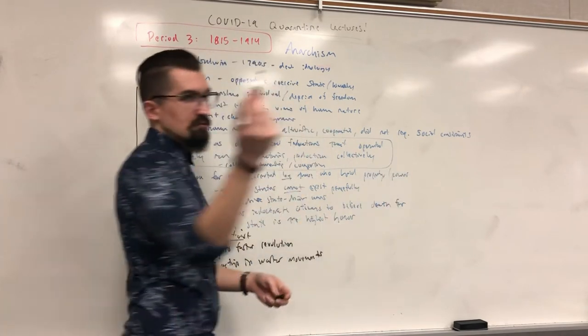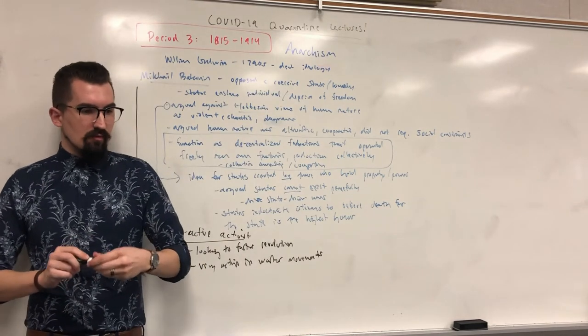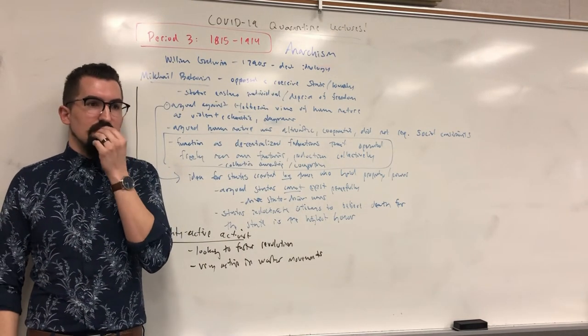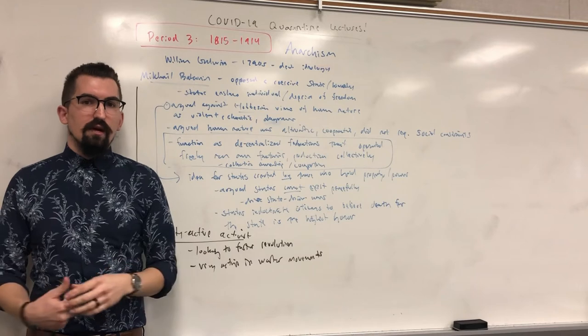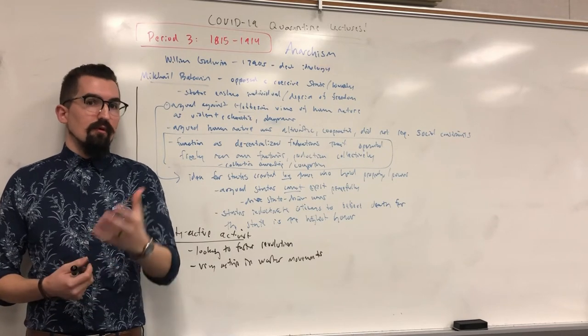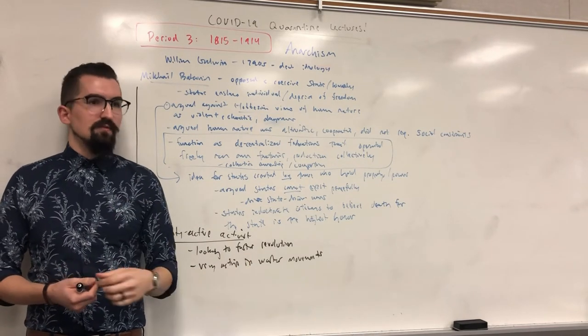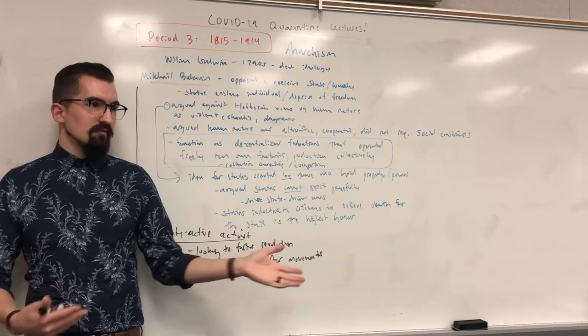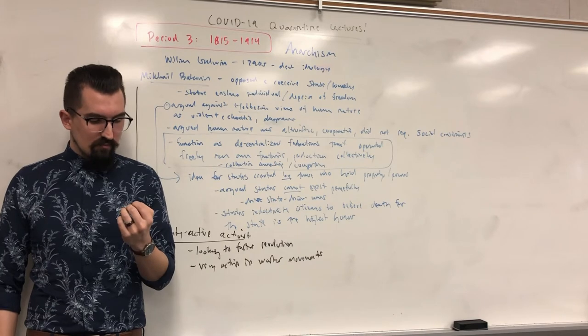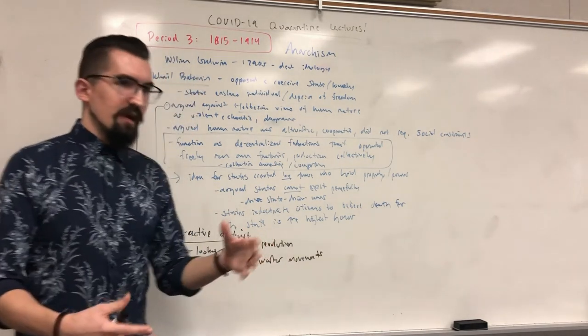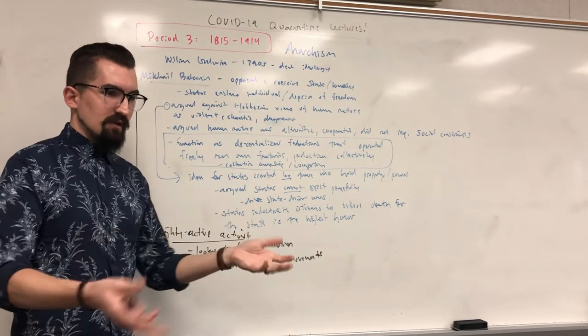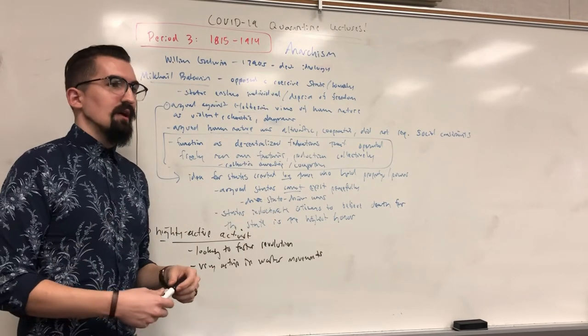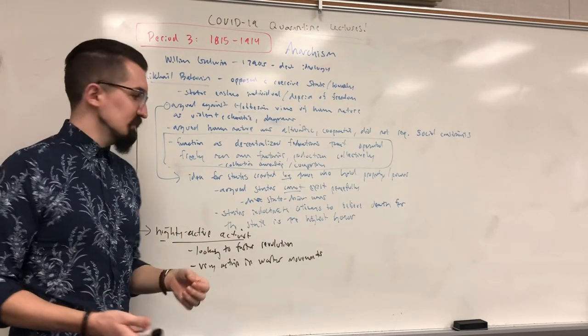And he was also very active in worker movements. There were several local and international organizations that, like Industrial Workers of the World, that attempted to sort of unify the working class and move for reform. Or, you know, in Marx and Bakunin's eyes, either a proletariat revolution for Marx or some sort of anti-state revolution for Bakunin. They were very active in those communities, trying to foster and garner support for changing the way things were.